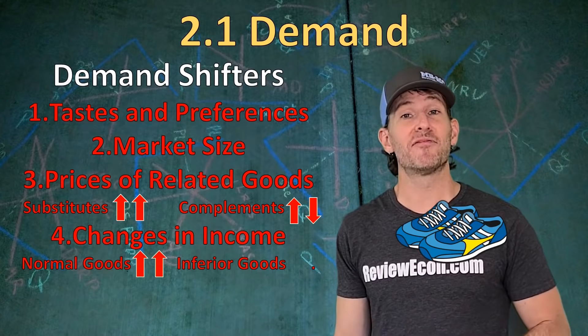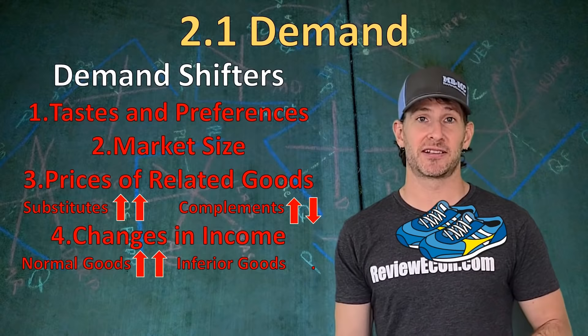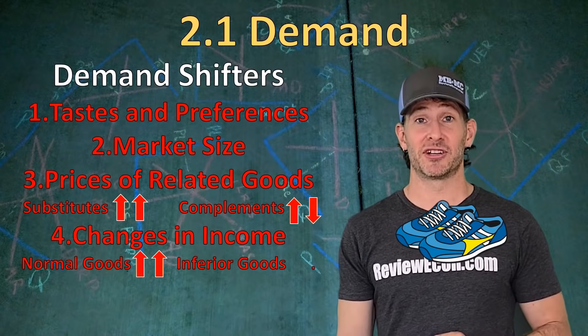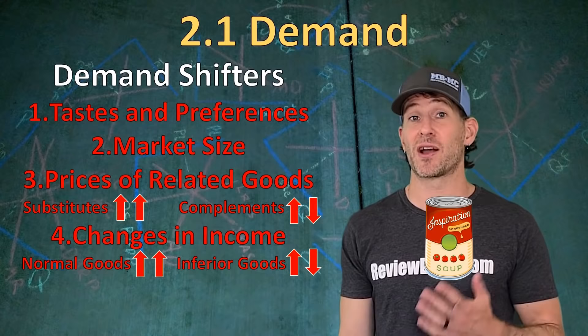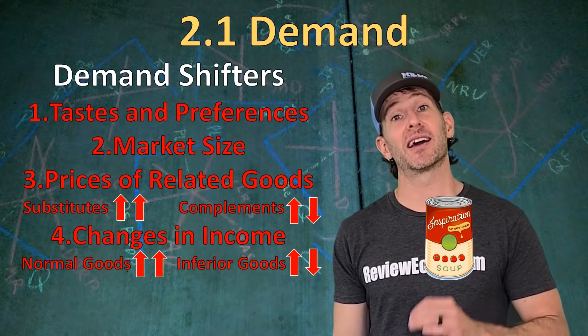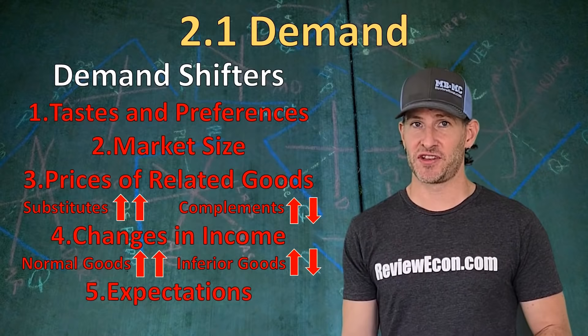Next, we have changes in income. For most goods — like shoes — when you have more income, you buy more of that product. An increase in consumer income will increase demand, and a decrease in consumer income will decrease demand. The other type is called inferior goods. With inferior goods, when incomes rise, people buy less of those products. Examples include one-ply toilet paper, Top Ramen, or condensed soup — when incomes rise, people buy less of those.